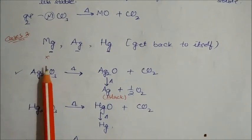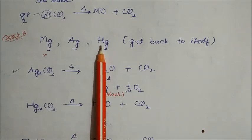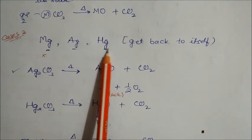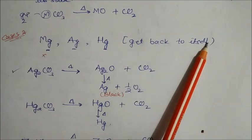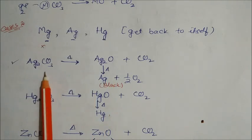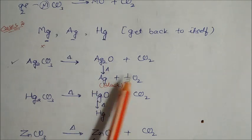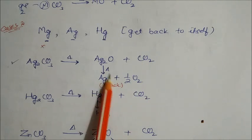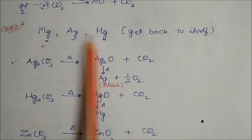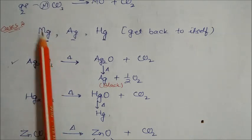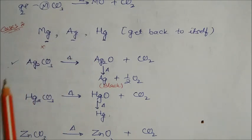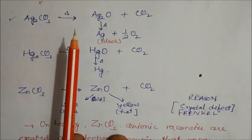There are three elements — magnesium, silver, and mercury — notable for their carbonate behavior. Silver and mercury carbonates, when heated, decompose all the way back to the free element. Silver carbonate gives silver oxide, then silver plus oxygen plus CO₂. Mercury carbonate gives mercury plus half oxygen plus carbon dioxide. Magnesium is the exception — it cannot revert to magnesium metal; it forms magnesium oxide instead.